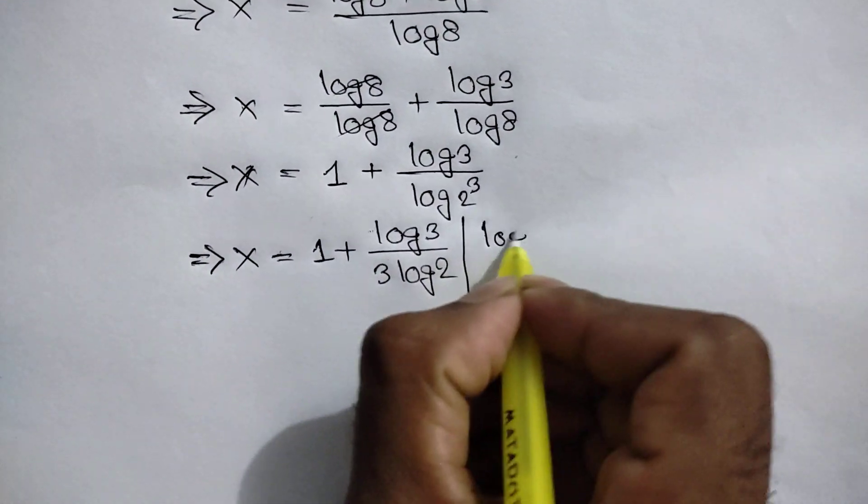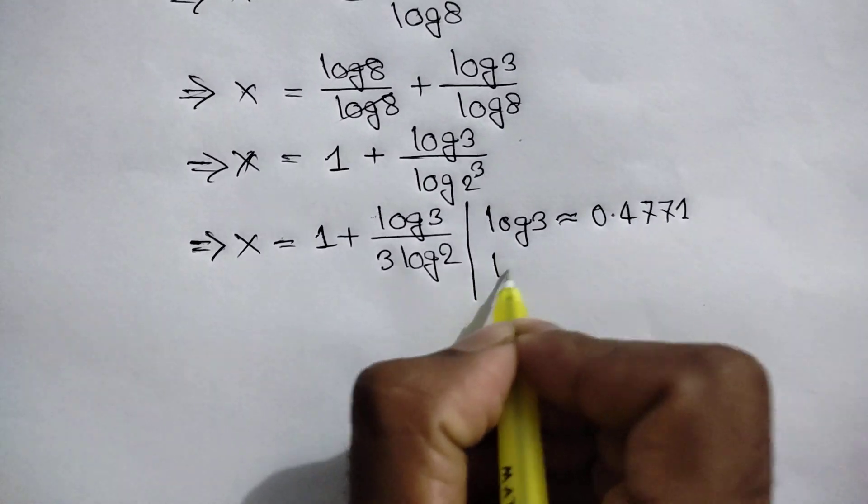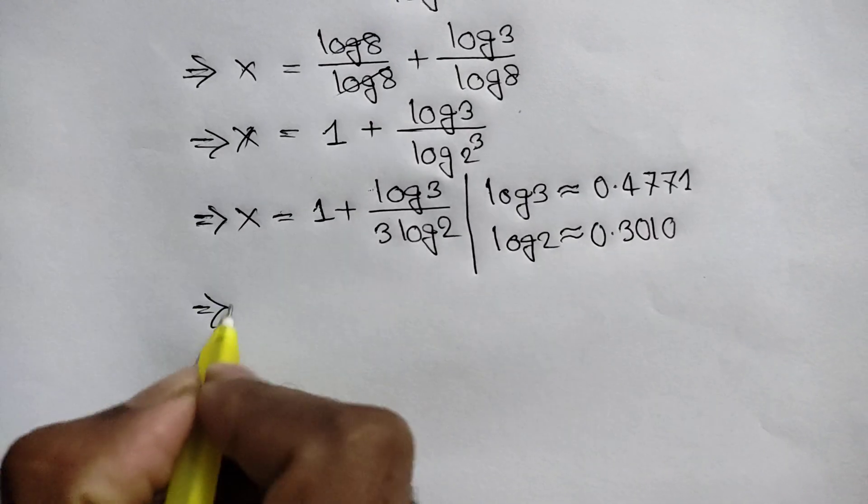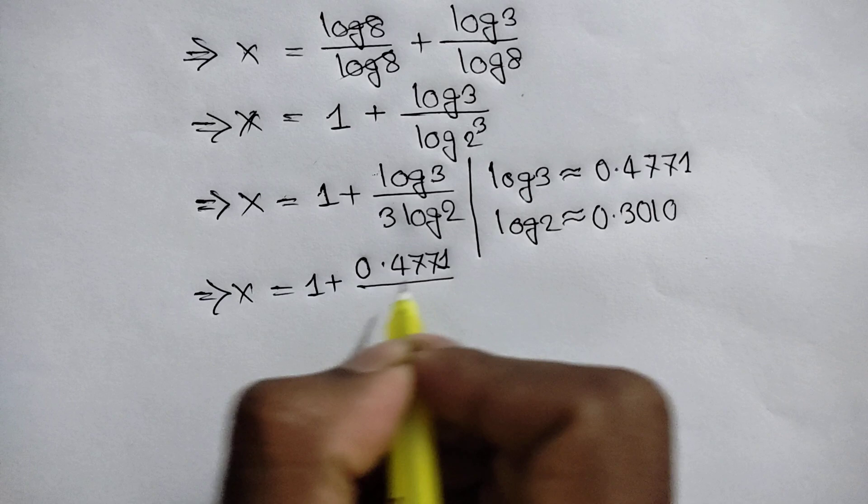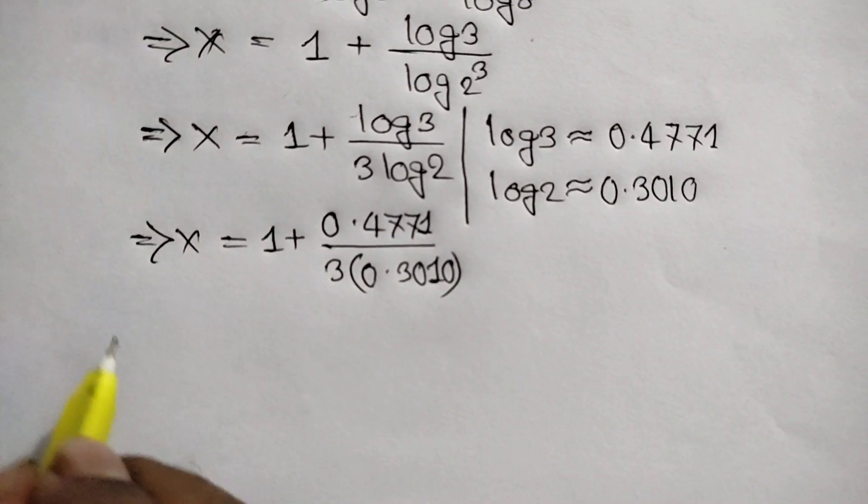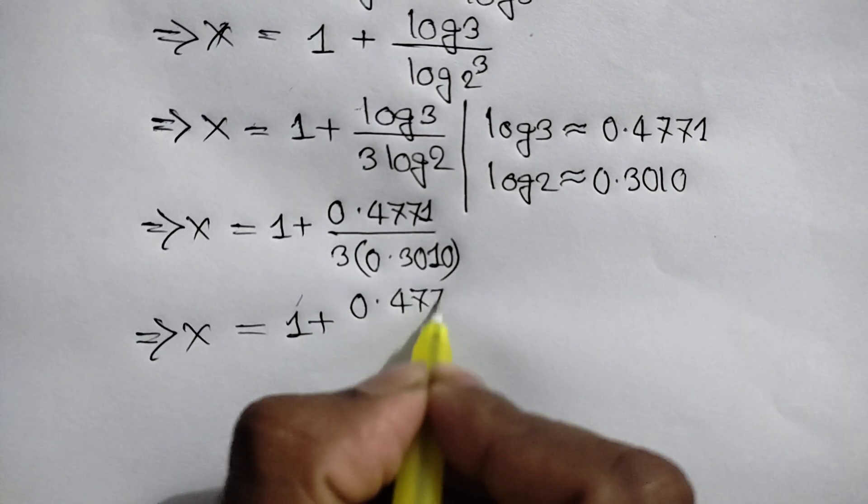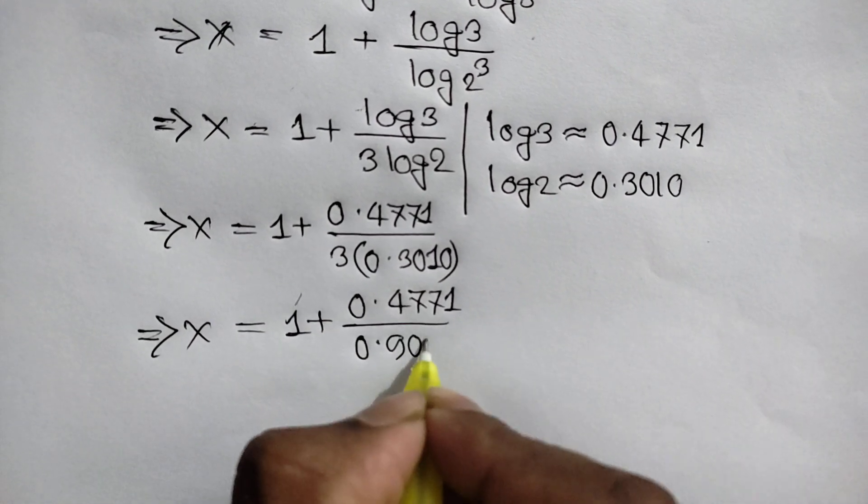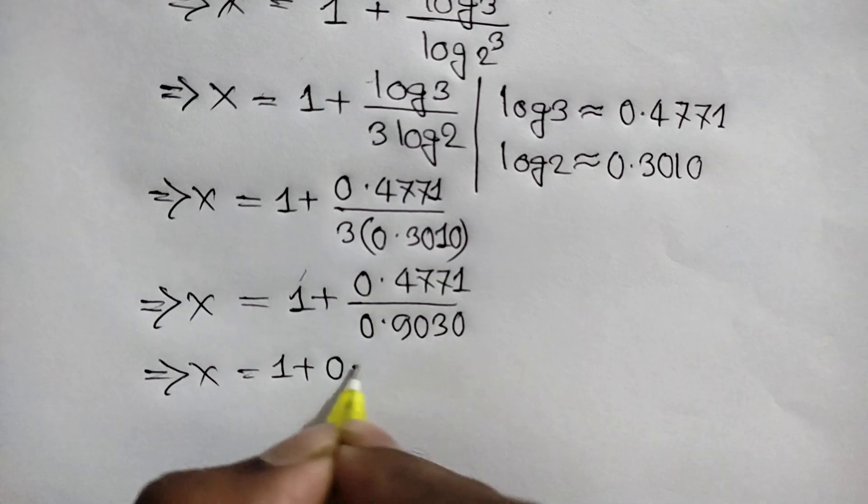We know log 3 is 0.4771 and log 2 equals 0.3010. So x equals 1 plus 0.4771 over 3 times 0.3010. The denominator is 0.9030, and this divided by this equals 0.528.